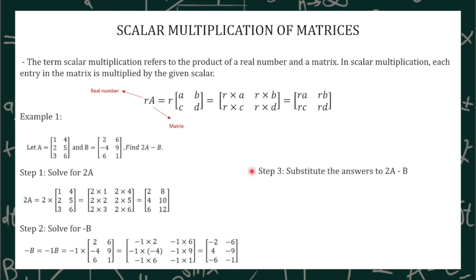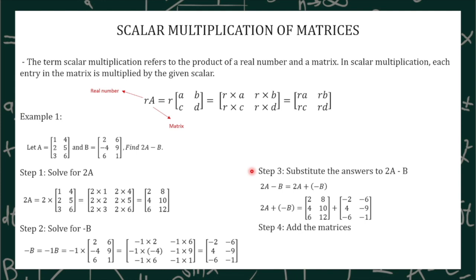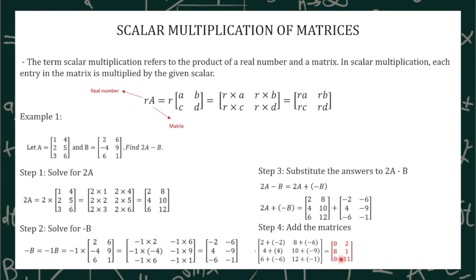Next step is we have to substitute the answers to 2A minus B. 2A minus B is also equal to 2A plus quantity negative B. After substituting our answers, we add the following matrices: 2 plus -2 will become 0, 8 plus -6 will become 2, 4 plus -4 will become 0 — wait, 4 plus 4 will become 8, 10 plus -9 will become 1, 6 plus -6 will become 0, and 12 plus -1 will become 11. So our answer is [0, 2, 8, 1, 0, 11].